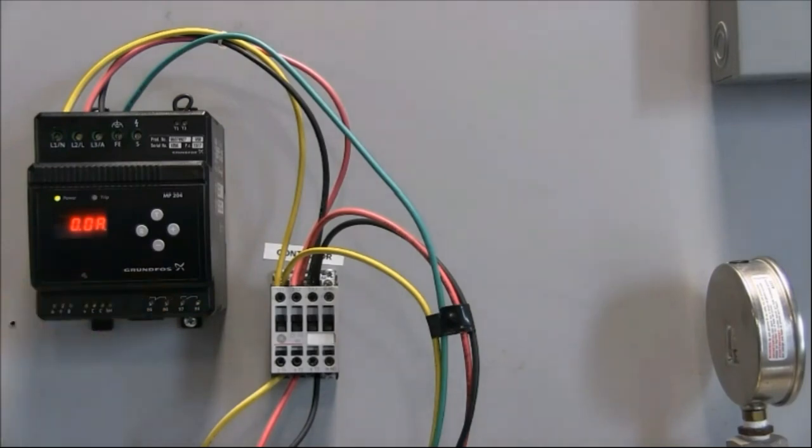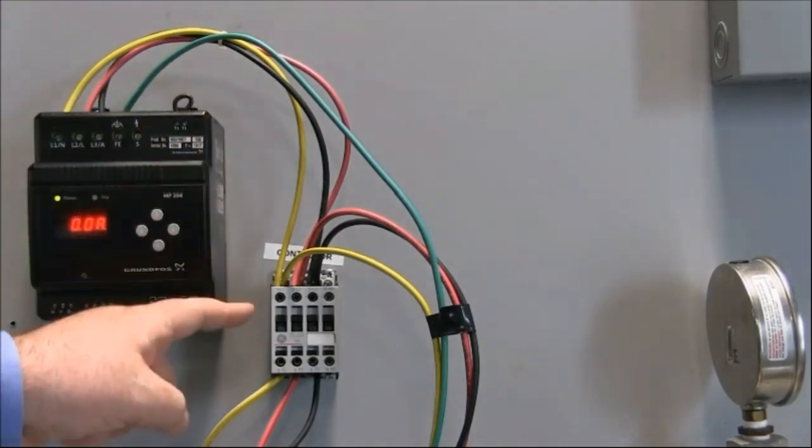When we're wiring in an MP204, in this case we're wiring in the voltage input to L1, L2, and L3 for a three-phase voltage. It's important to note that three-phase wires to the line side of the starter.